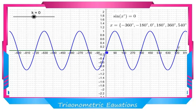The angles between 0° and 360° are called principal solutions. Here 0° is included and 360° is excluded; in radians, 0 is included and 2π is excluded.